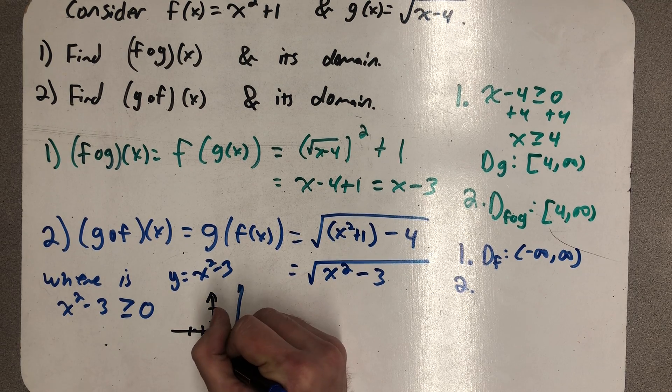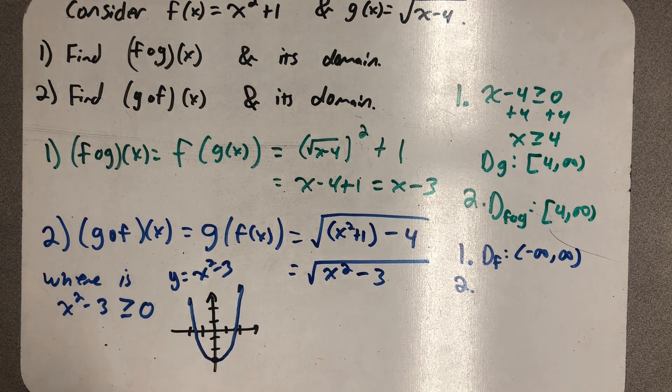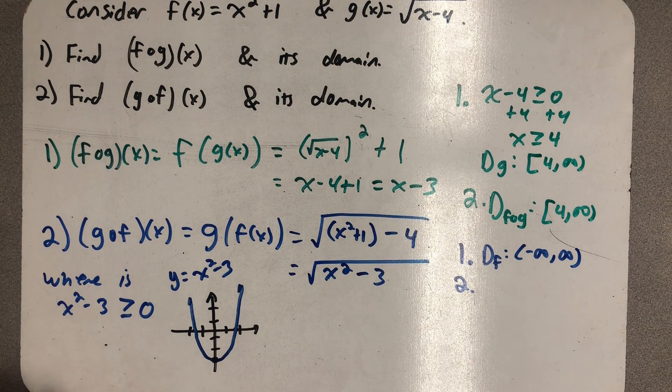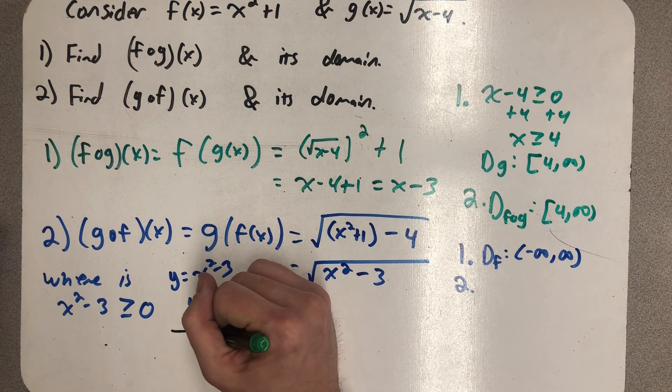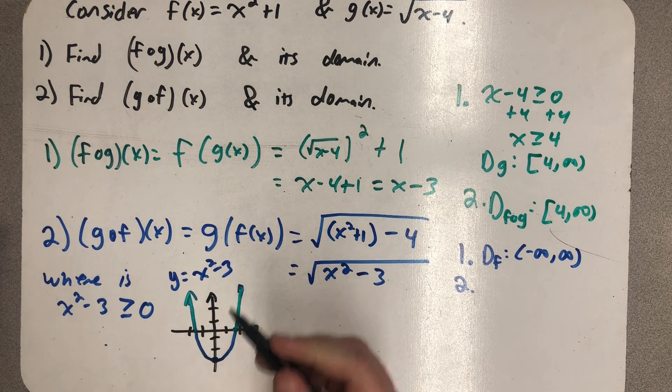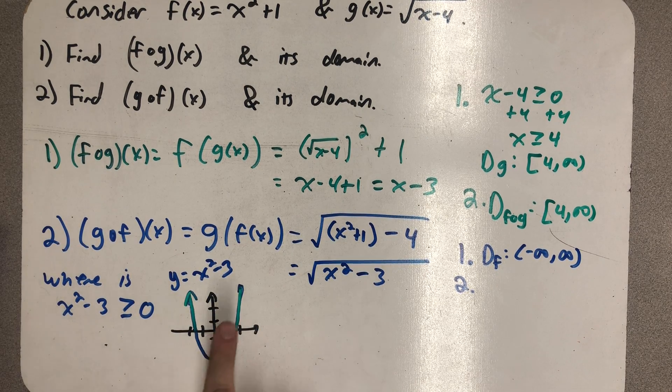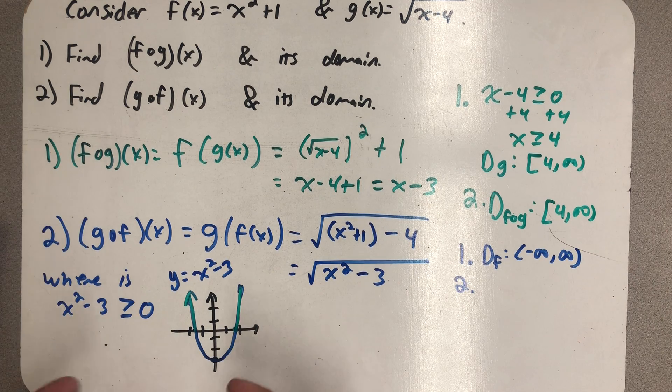For x squared minus 3 to be greater than or equal to 0, well, it means that graph has to be above or on the x-axis. So I'm looking for the x's that correspond to these places. On the kind of wings, on the outside of that function.